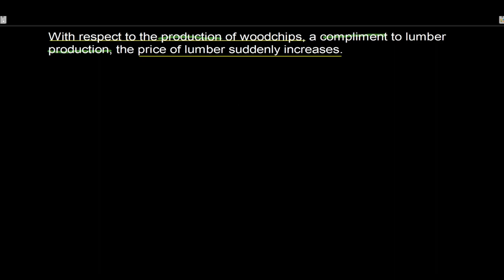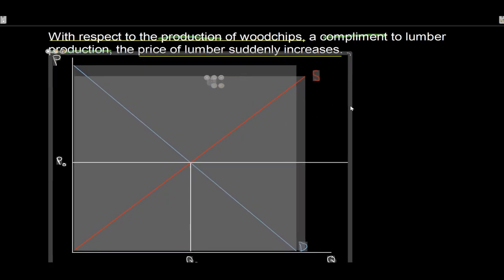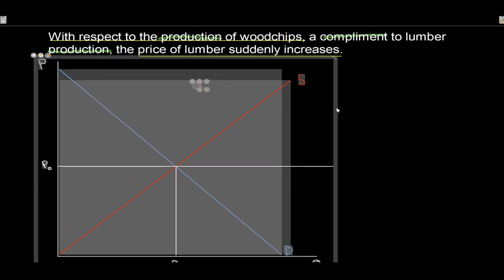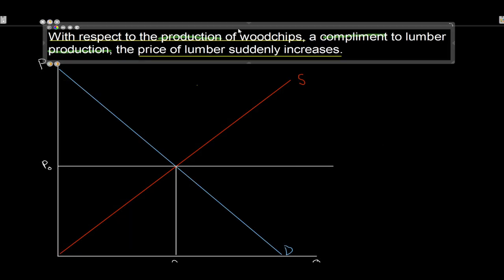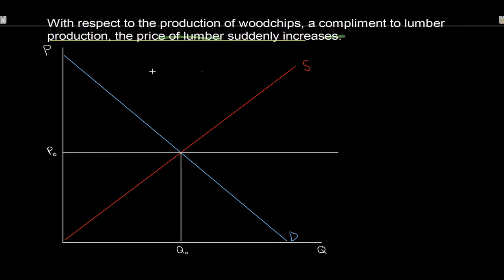First thing we should always want to do is draw our supply, draw our demand, draw our market. So let's do that - we're drawing our initial market in equilibrium. It's always helpful to say what market we're referring to. In this case, with respect to the production of wood chips, we are referring to the market for wood chips. We're starting in initial equilibrium. Now our shock: complement to lumber production - wood chips and lumber are complements and the price of lumber suddenly increases. Price of lumber goes up.